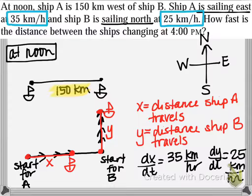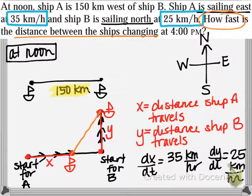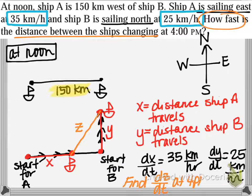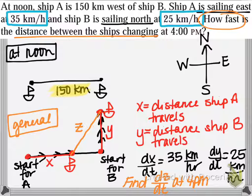What we're asked to find is how fast the distance between the ships is changing — so we're looking for a rate. That distance is also changing, so I'll call it z. Ultimately, we're looking for dz/dt, and we're looking for that rate at 4 p.m. I recommend drawing several pictures: one at the beginning, and then a general diagram showing what happens as the ships start moving.